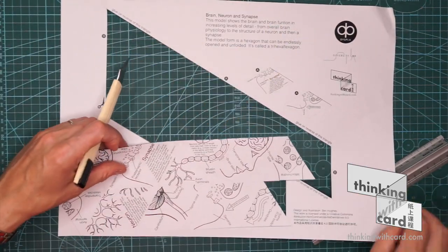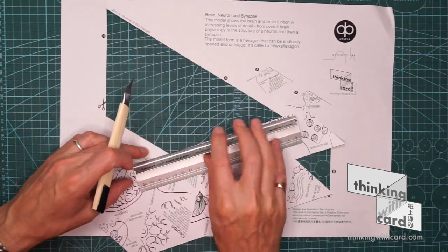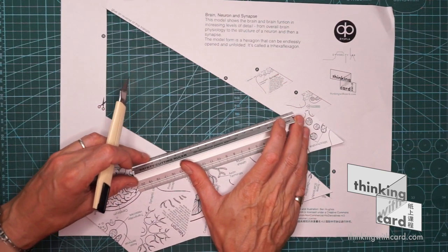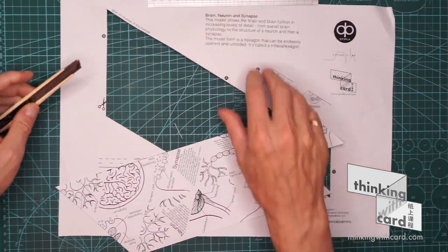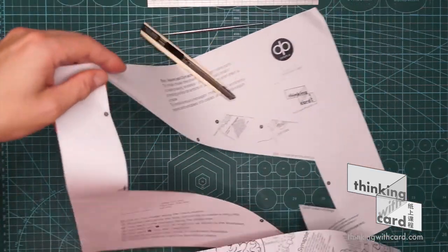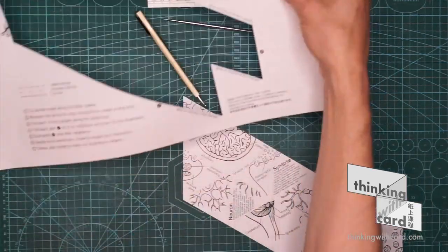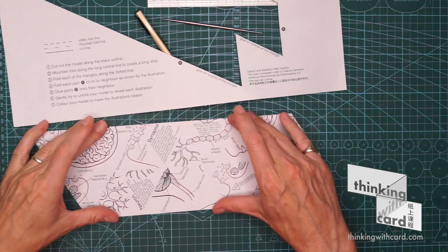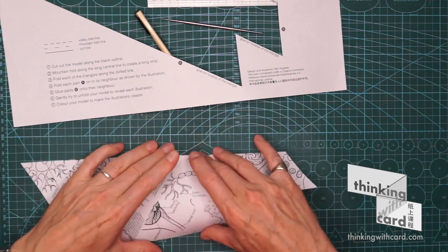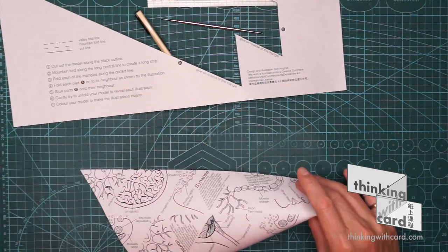So the first fold is what we call a mountain fold. This line in the middle. A mountain fold just means it folds upwards like that, like a mountain.